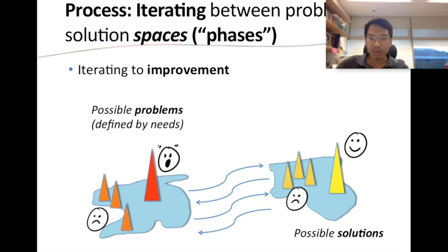Another thing design is well known for is its process. One key aspect is the idea that you're going back and forth between what you conceive of as the problem and what you conceive of as the solution. You might start with a small problem, try to design a solution, find the patient is still unhappy, and discover there was another underlying problem. You go back and try again until you find what's really the biggest problem. This is what we describe as co-evolution — going back and forth between the problem space and the solution space — and it is very classical of design work.